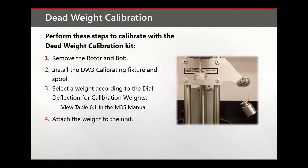Next, attach the weight to the unit, then adjust the alignment of the weight. The string should be horizontal from the spool to the pulley.